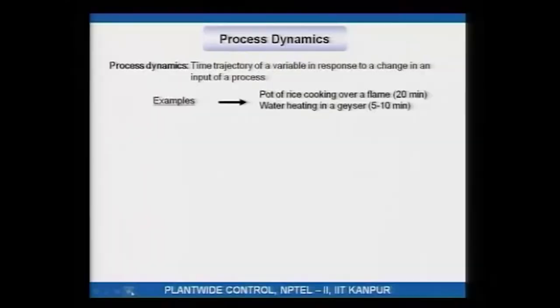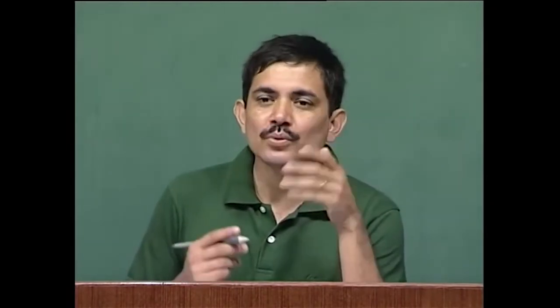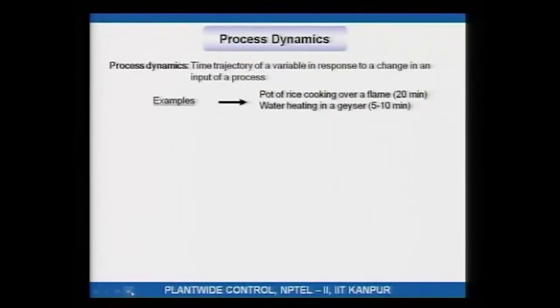That is the outline for this module. Coming to process dynamics — what is process dynamics? We all know dynamics: they say the situation is dynamic, meaning the situation is changing. This change over time is referred to as process dynamics. Specifically, if you make a change to an input to a process, how does the output variable respond over time — that is referred to as process dynamics. To define it: process dynamics is the time trajectory of a variable, specifically an output variable, in response to a change in an input to the process.